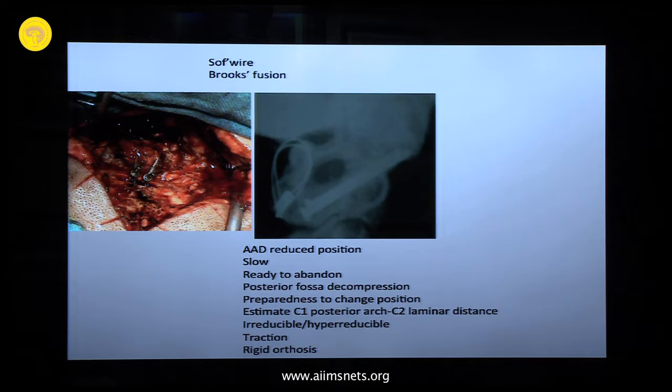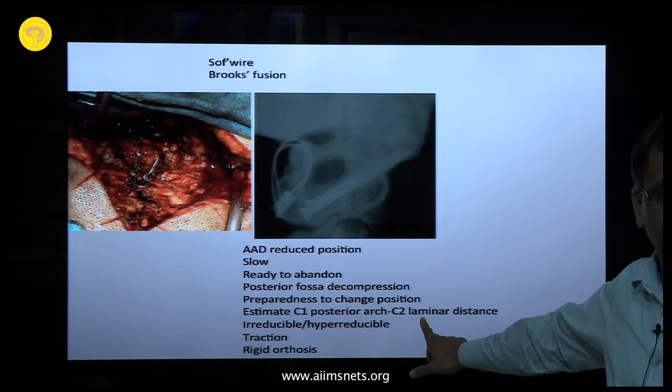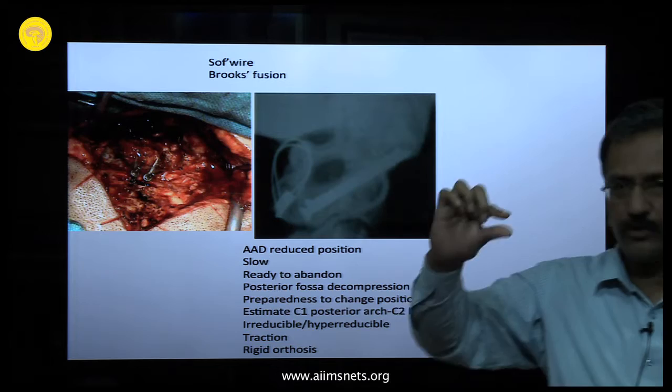Please estimate the C1 posterior arch to C2 laminar distance — this is very important. If the distance is too long, the sublaminar wire loops become longer, causing sublaminar compression. For a good fusion, the C1 posterior arch and C2 lamina must be close together. A long loop inside means sublaminar compression — a detail people often overlook.